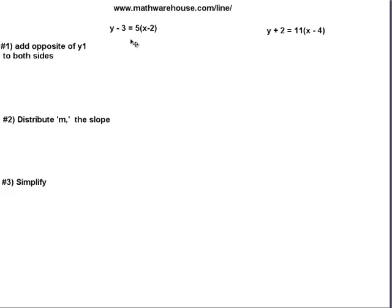Let's convert y minus 3 equals 5 times x minus 2 to slope-intercept form. If you remember, we said add the opposite of y1 to both sides. y1 is negative 3, so its opposite will be plus 3.